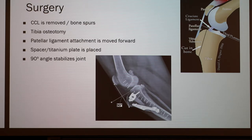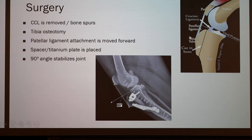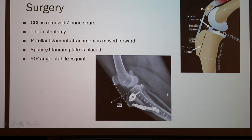During the surgery, the CCL is going to be removed along with any bone spurs noticed on a previous x-ray. A tibial osteotomy will occur — that is the cutting of the tibia bone — as shown by the dotted line here. By doing that, the patellar ligament is going to be moved forward. A spacer and a plate are placed here; once the cut is made, this part moves forward, moving the patellar ligament forward. In this post-surgery x-ray, the lines are staples to hold everything together, and you can see the spacer and plate with screws keeping it all in place. This front part of the tibia bone is the tibial tuberosity, and the whitish gap is where the spacer holds things in place along with the plate.